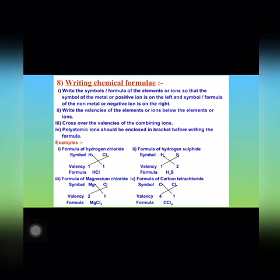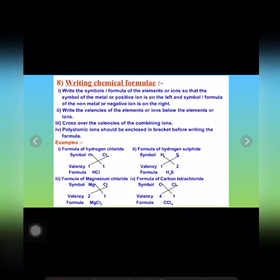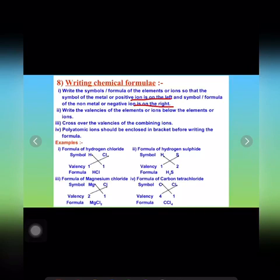These are some of the rules for writing chemical formulae. The first rule is to write the symbols of the elements or ions so that the symbol of the metal or positive ion is on the left, and the symbol of the non-metal or negative ion is on the right.